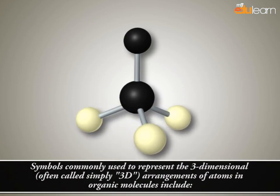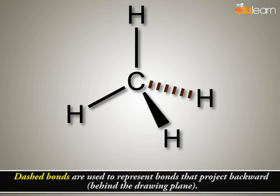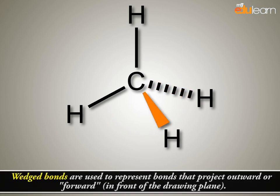Symbols commonly used to represent the three-dimensional arrangement of atoms in organic molecules include: normal lines or normal bonds, used to represent covalent bonds lying in the plane of the drawing surface, i.e., paper, textbook, or screen if viewed electronically; dashed bonds, used to represent bonds that project backward behind the drawing plane; and wedged bonds, used to represent bonds that project outward or forward in front of the drawing plane.